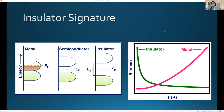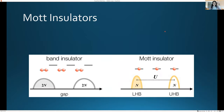The hallmark of an insulator is a gap between the conduction and valence band, or hybridized bands — in some way the fact that the Fermi energy lies in a gap and not in the middle of a band, which is characteristic of a metal. The signature is resistivity that goes up as temperature goes down for an insulator, in contrast to a metal where resistivity goes down as temperature goes down.